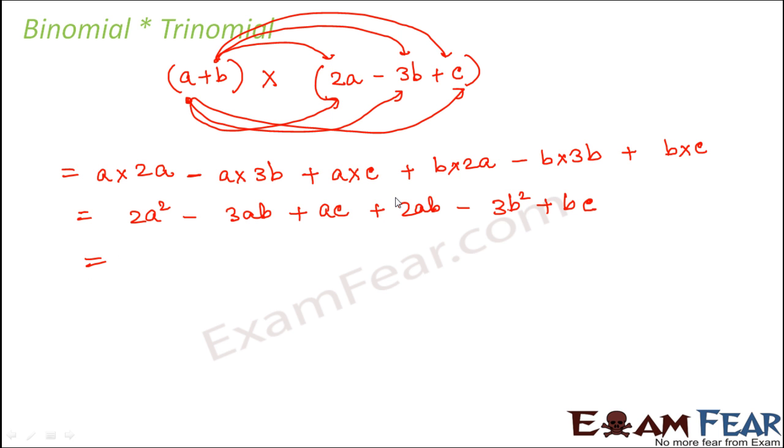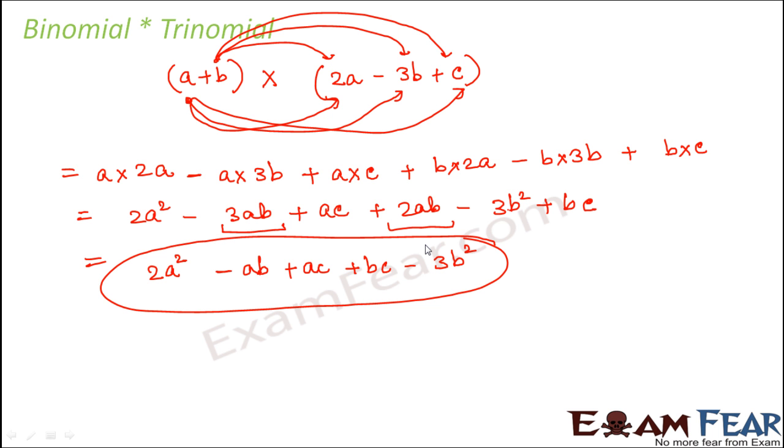Now if you try to rearrange the terms and see if you have any like terms, you will find that -3ab and 2ab are like terms. So let's simplify them further. Minus 3ab plus 2ab would be -1ab plus ac plus bc minus 3b². So this would be the final product. You see when you multiply a binomial with a trinomial, your product has so many terms. There are five terms in the final product.